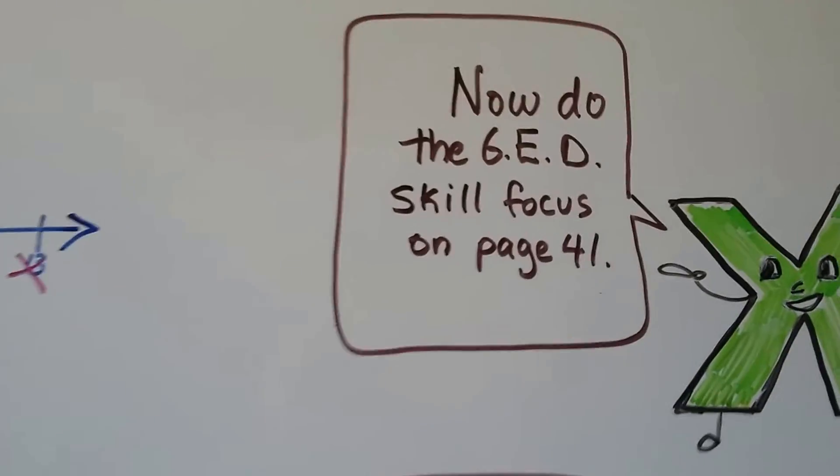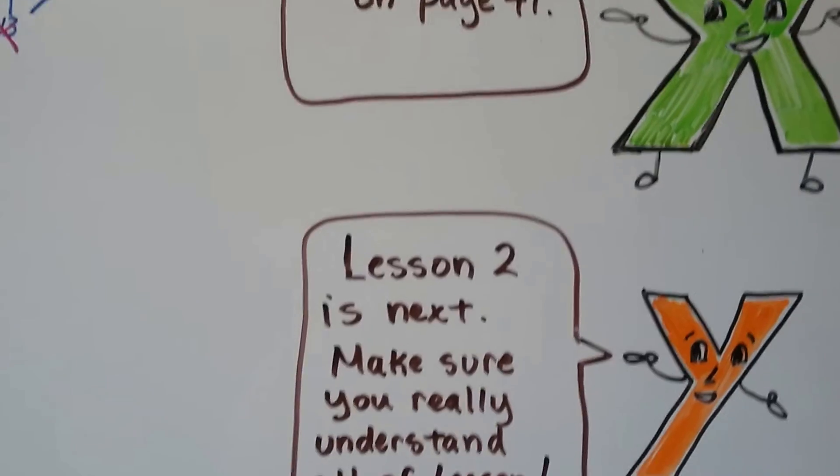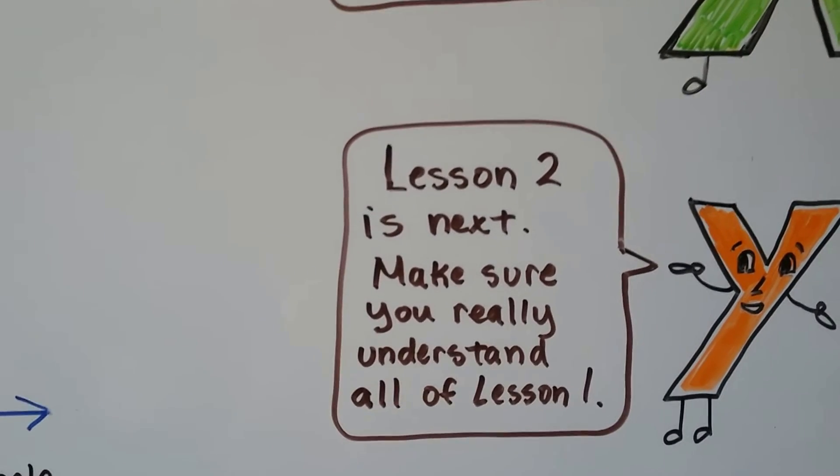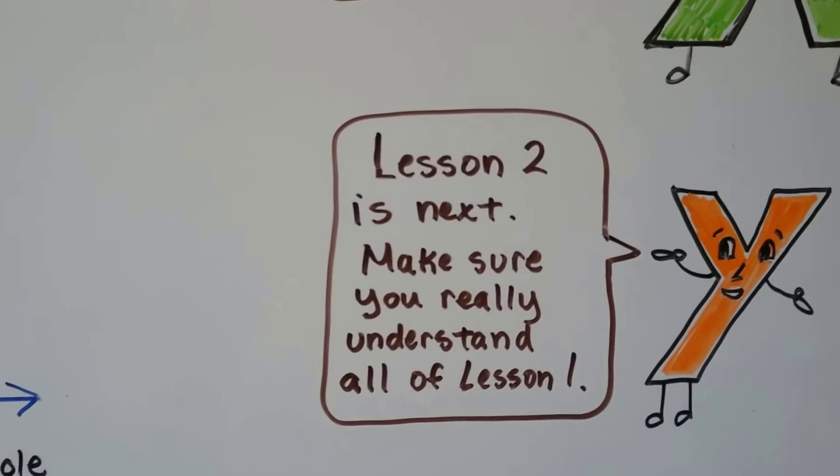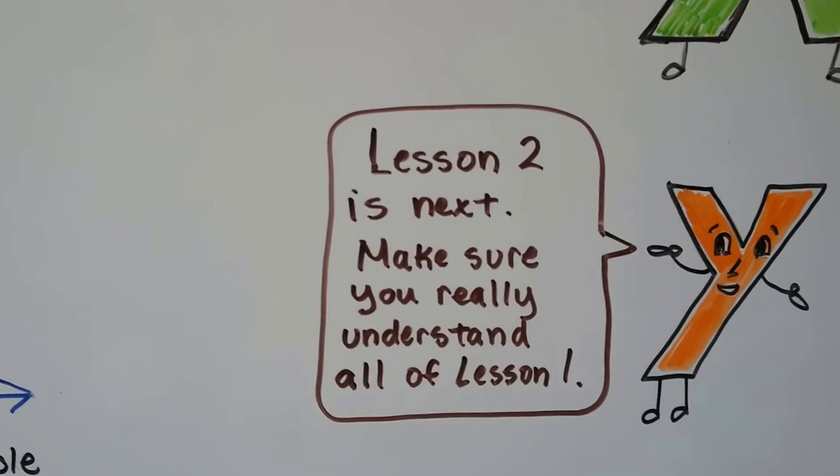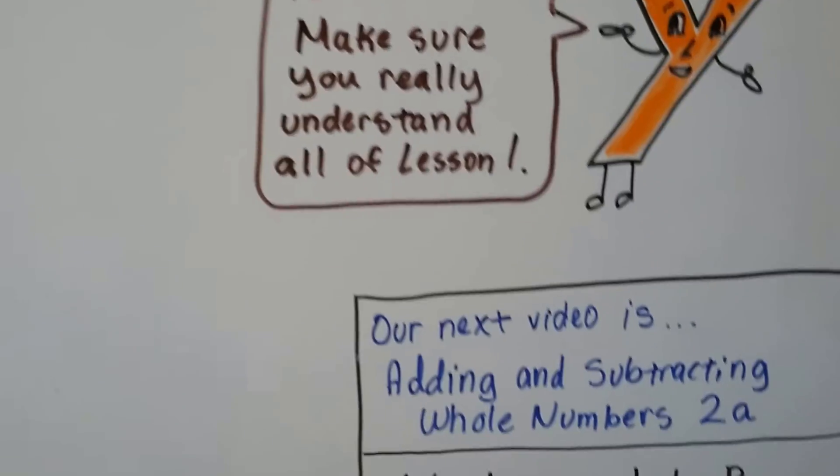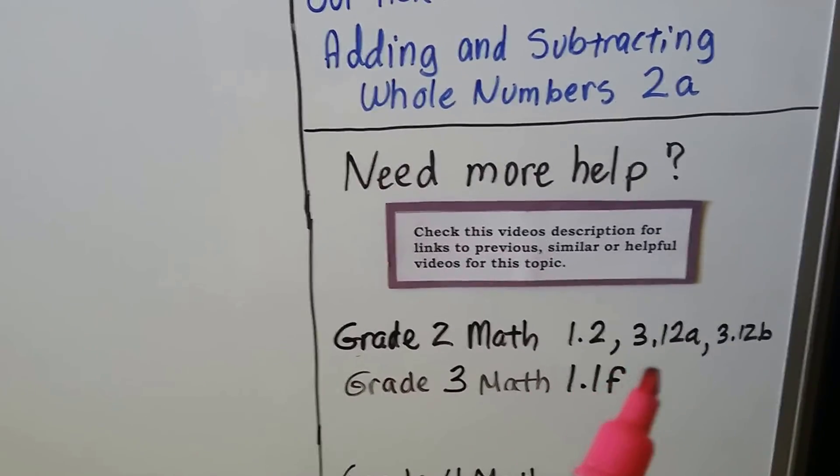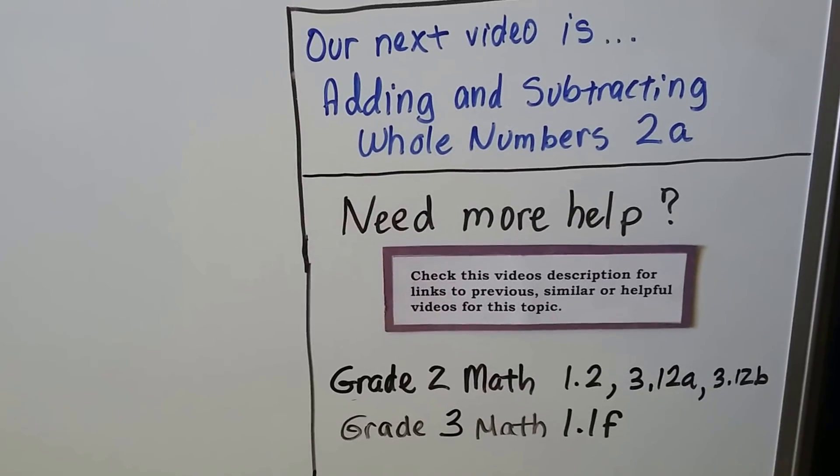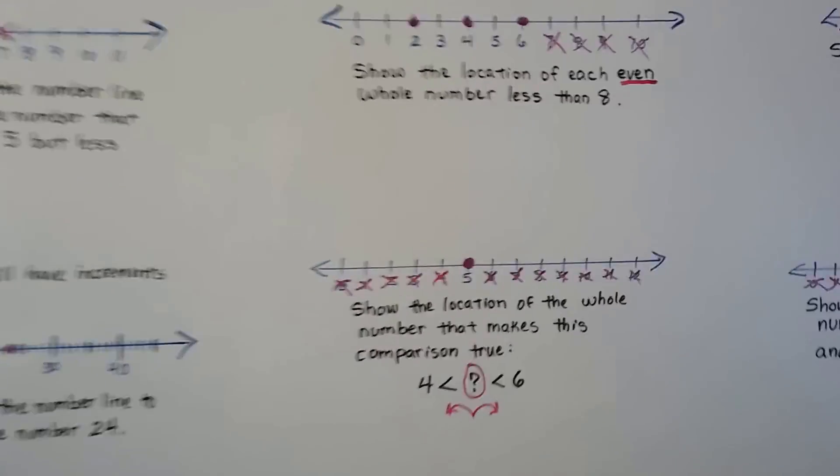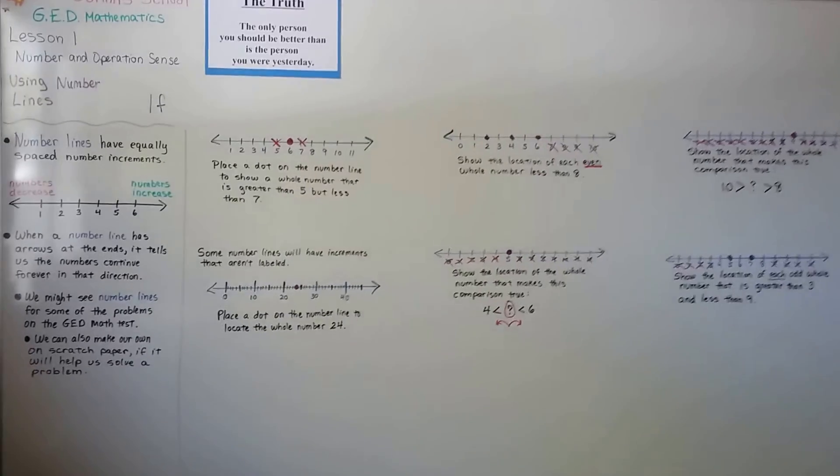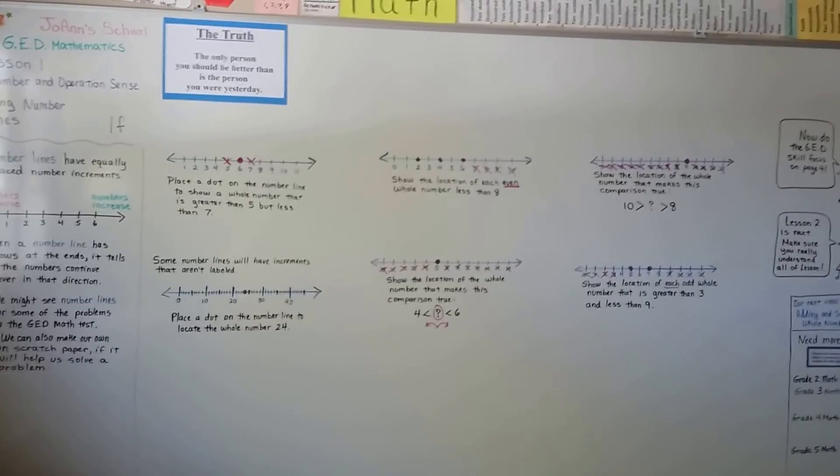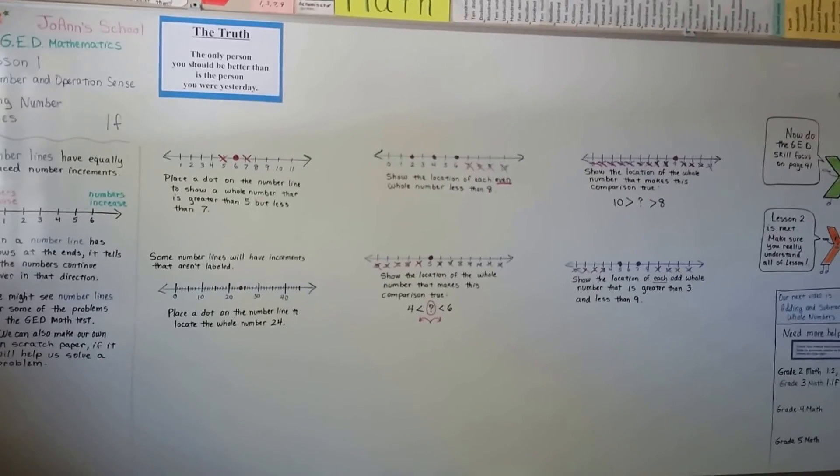You should be ready to do the GED skill focus on page 41 now. And lesson 2 is next, so you need to really make sure you understood all the videos from 1A through 1F for lesson 1 before you move on, because otherwise you're just going to be causing problems for yourself and trying to do harder things when you don't understand the previous ones. The next video is going to be adding and subtracting whole numbers. It's lesson 2A. And there's going to be links in this video's description for these videos. They're going to help you with number lines and even and odd numbers. That's it for lesson 1. We're ready to move on to lesson 2. We're getting there slowly but surely one step in front of the one foot in front of the other. That's how you climb a mountain. You don't look at the top of the mountain. You just put one foot in front of the other, and eventually you'll be at the top. Keep trying. I'll see you next video. Bye.